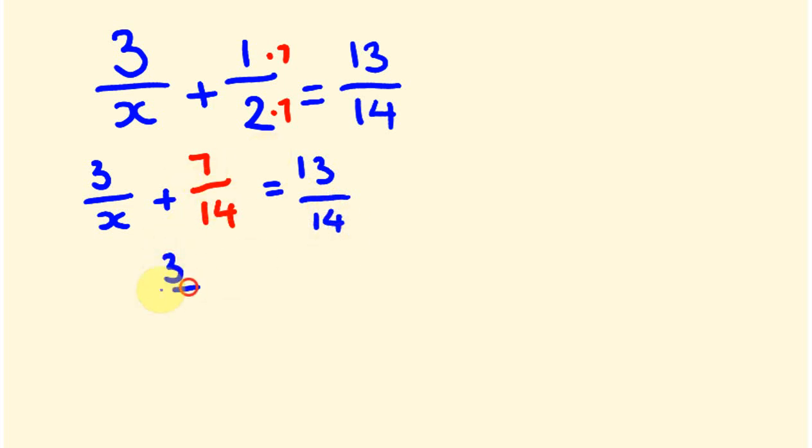We're going to end up with 3 over x, and this is going to be equal to 13 take away 7, which is 6 over 14. And we can do once again this cross multiplication: 6 times x is 6x, and this is going to be equal to 14 times 3. 14 times 3 is 42, so what number do we times by 6 to get 42? It means that x is equal to 7, because 6 times 7 is 42.